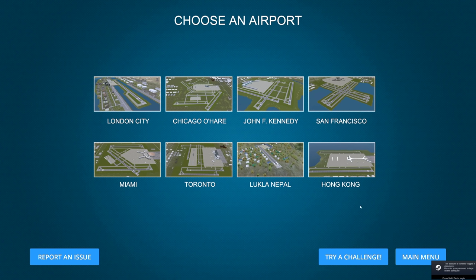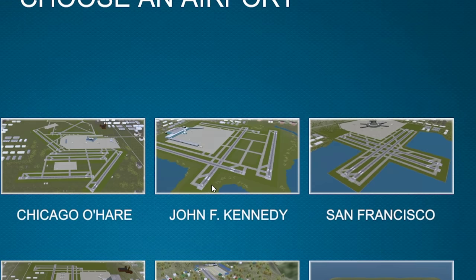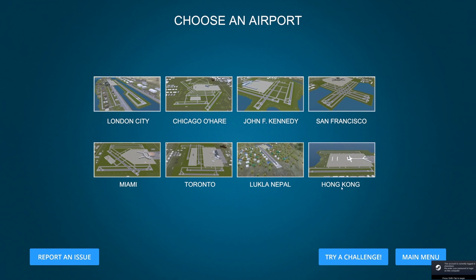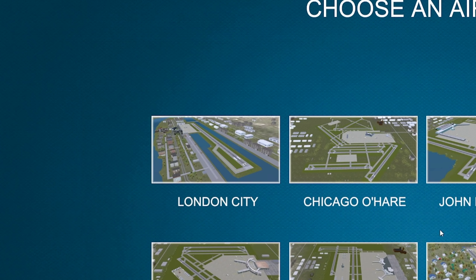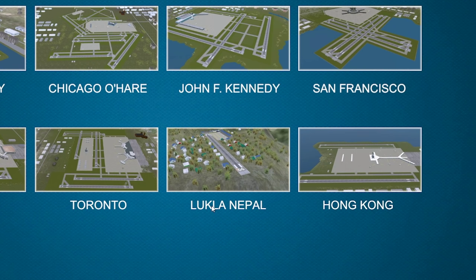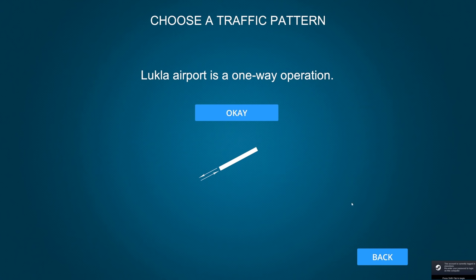Let's press play. We can actually choose our airport. We have big international airports like Chicago, John F. Kennedy, Toronto, and Hong Kong, but we also have more exotic airports like London City or Lukla, which is in Nepal. Let's go there and see how that works. We can choose which runway is being used, though ironically at Lukla Airport we can't.